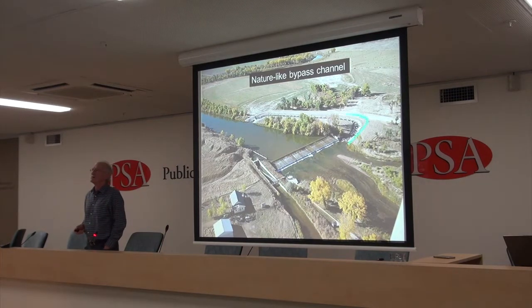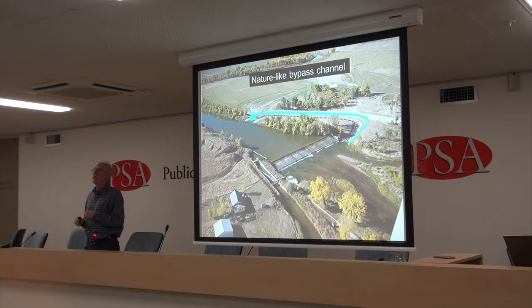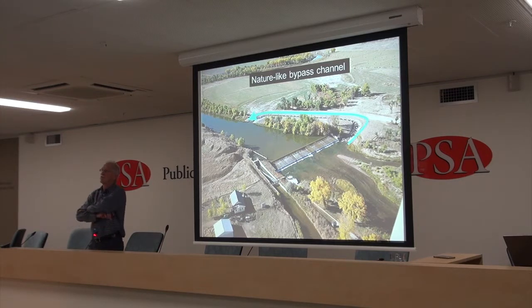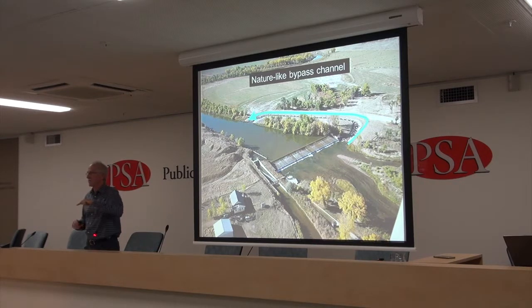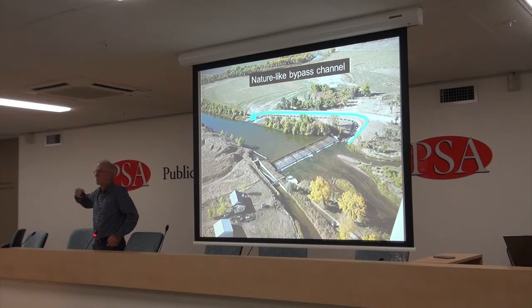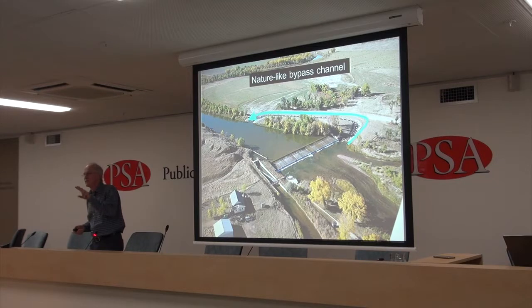Nature-like bypass channels are a channel built right around the structure. These can have a narrow headwater and tailwater range in some designs, but they're very effective within those requirements. They're very widely used in Europe — Germany, Austria, and to a certain extent France. They're sometimes used to compensate for loss of flowing-water habitat, where weir pools inundate riffles. These are sometimes on very low gradients — like 1 in 200 — trying to recreate riffles and habitat. So they serve two functions: habitat and fish passage.